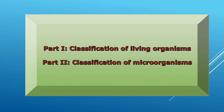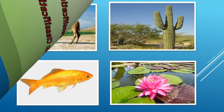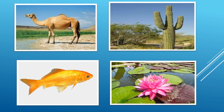Chapter one consists of two parts. In part one there is a classification of living organisms and in part two there is a classification of microorganisms. Today we are going to see the classification of living organisms. Last year we learned that all living organisms on the earth have adapted according to their geographic regions, their food intake capacity, and their behavior.